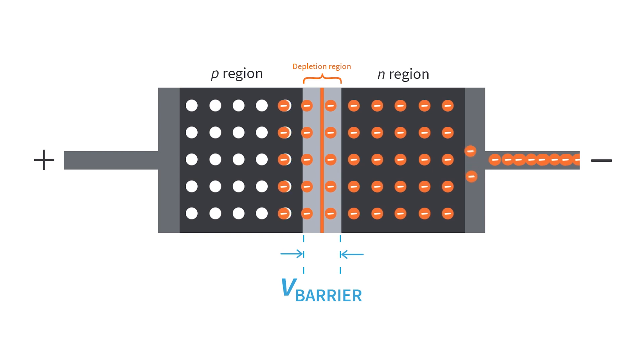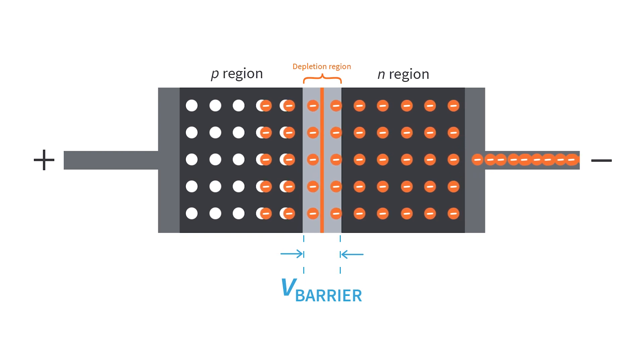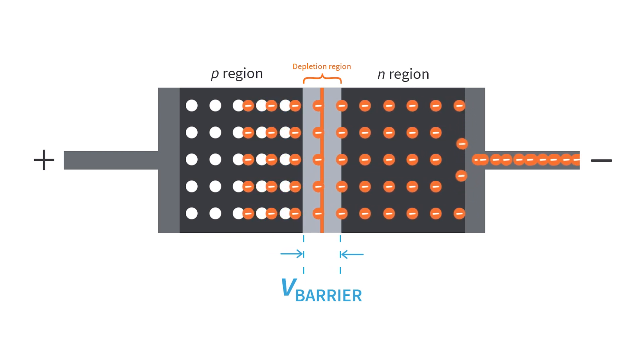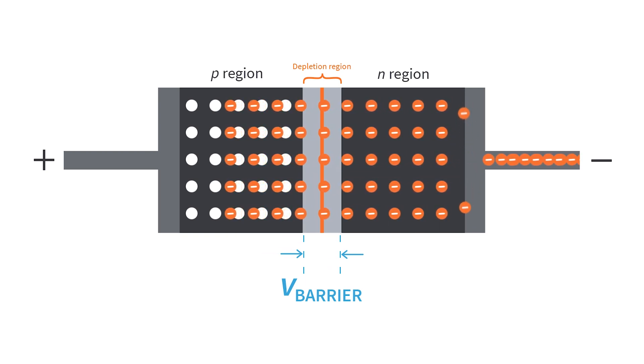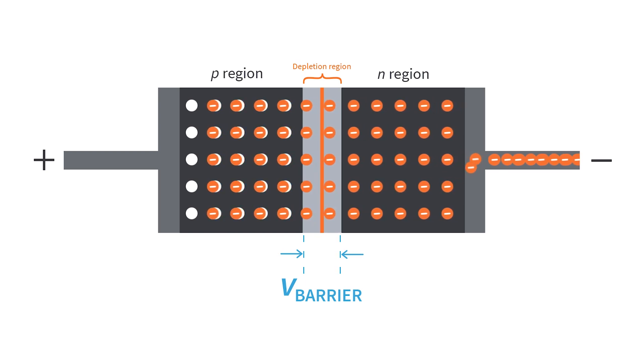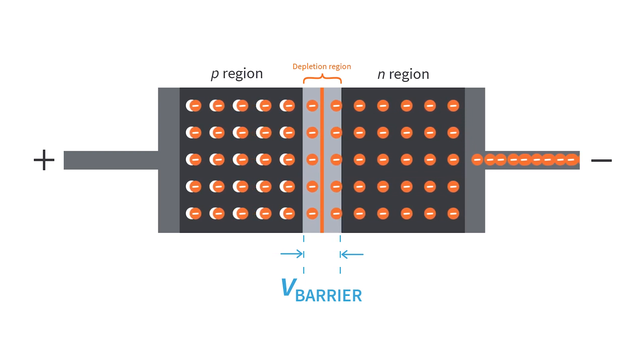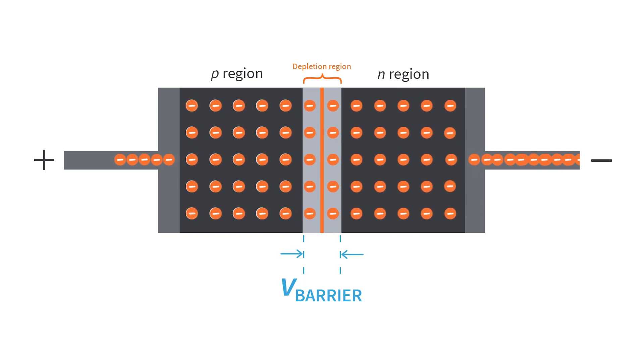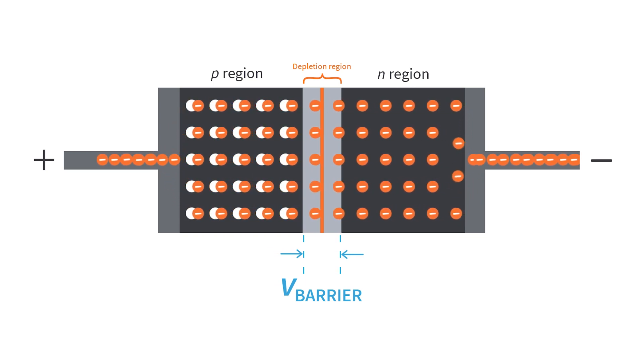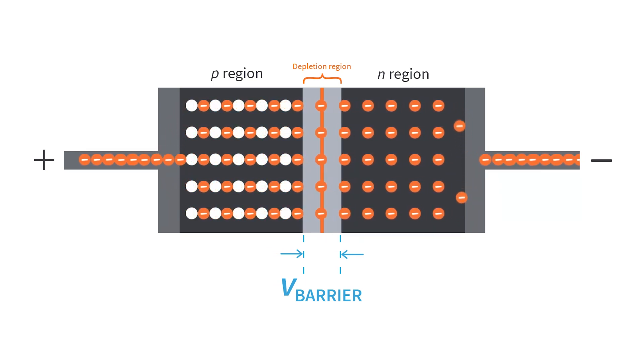Then after that, these valence electrons start to move toward the left end of the P region because they are attracted to the positive side of the external bias voltage. The holes in the P region become the pathway for the valence electrons. As the valence electrons move to the left, the holes, which are the majority carriers in the P region, also move to the right toward the junction.